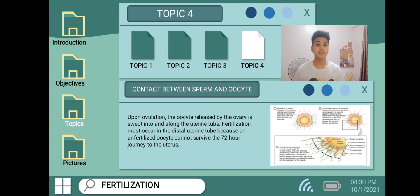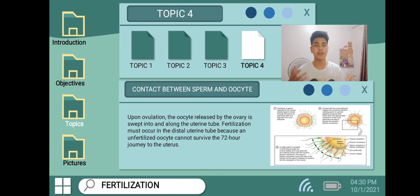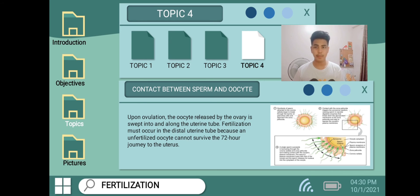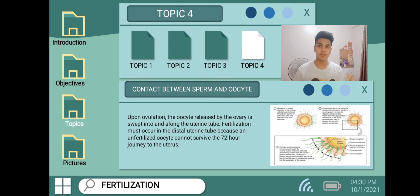Fertilization must occur in the distal uterine tube because an unfertilized oocyte cannot survive the 72-hour journey to the uterus. In order for an oocyte to survive, it needs to be fertilized first.